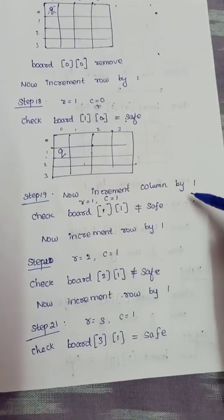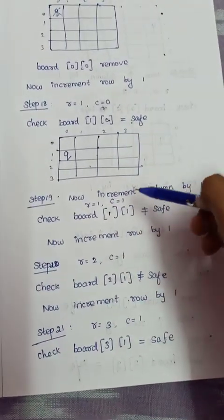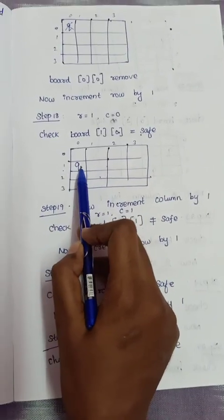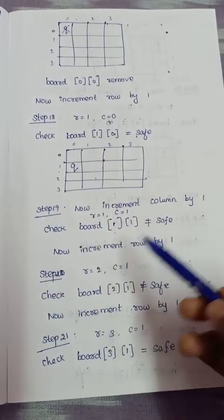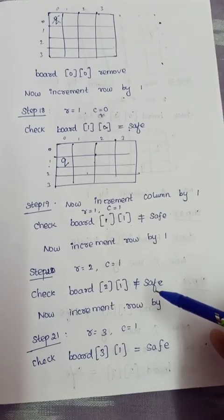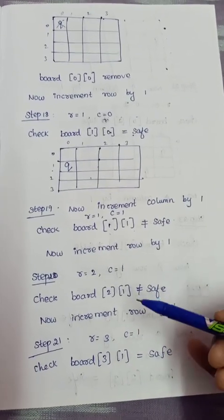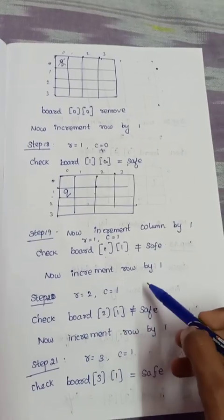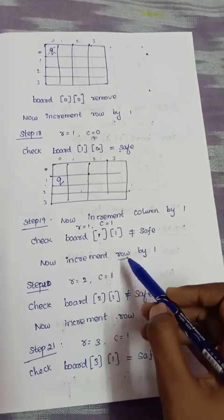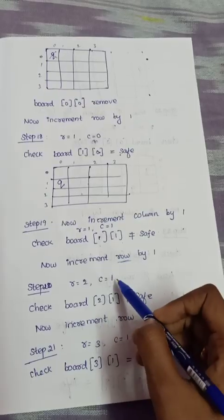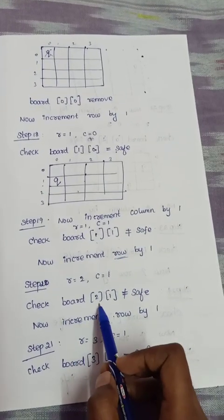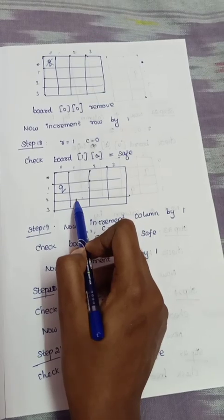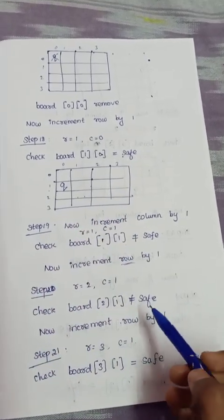We increment the column by 1. We check board[1][1] — row is attacked, so it is unsafe. We increment the row to 2 and check board[2][1]. The diagonal is attacked, so it is unsafe. We increment the row to 3 and check board[3][1].